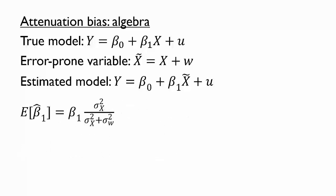Now let's focus on the final expression. It says that in expectation, or on average, we should expect our slope estimates beta 1 to equal the actual value of beta 1 times a fraction. Each of the variances is always positive, and as long as sigma w squared is not 0 — meaning there is some measurement error — the fraction is less than 1. So the estimated beta 1 tends to be the true beta 1 times a fraction less than 1, consistent with our simulation. The fraction tells us just how much the slope is attenuated. The greater the variance of the measurement error term, the smaller this fraction — that is, the more the slope is attenuated.